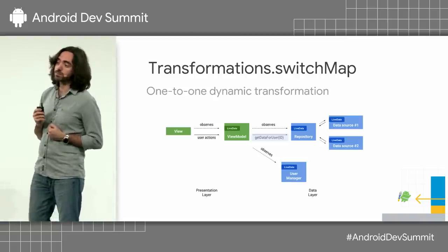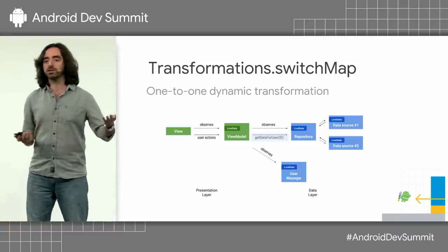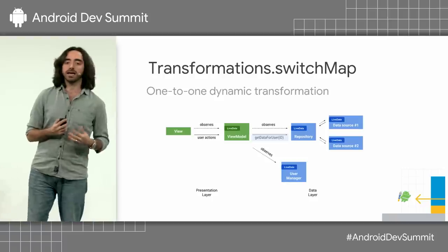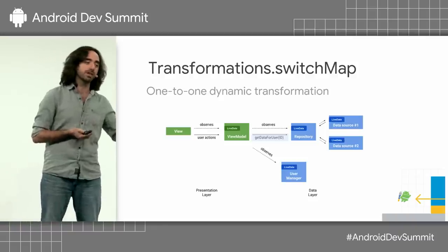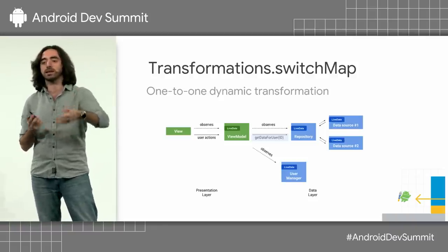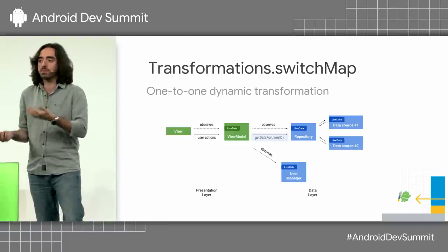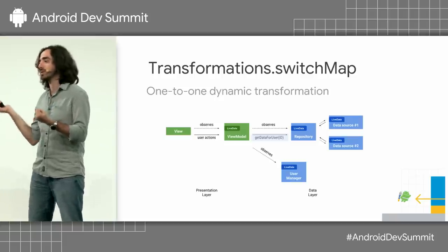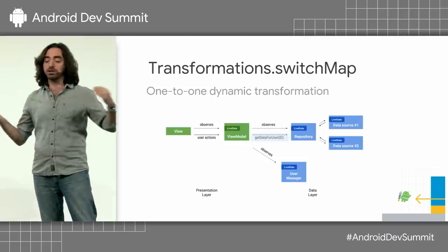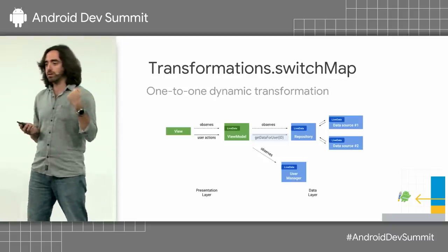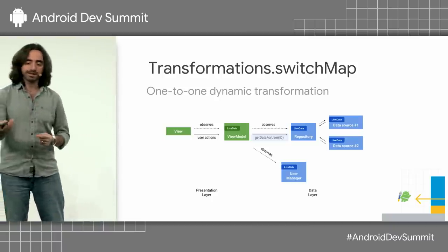Another transformation we provide is switchMap. When do we need this? Imagine you have an application where you have a user manager that keeps the logged-in user ID on disk. And whenever you grab that user ID, you need to talk to your real user repository to get the actual user object — which probably goes to the database and also the server. But that repository returns a LiveData as well, because the user object might change — it may return the cached one while it updates from the server. So you're in a situation where you have a LiveData of a logged-in user ID and a LiveData of a user, and you need to chain these. Map works if you are chaining from an ID to a user. But how do we chain from an ID to a LiveData of a user? That's switchMap.